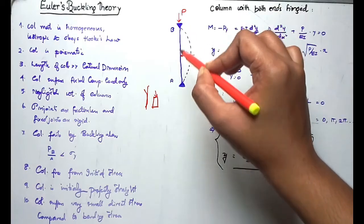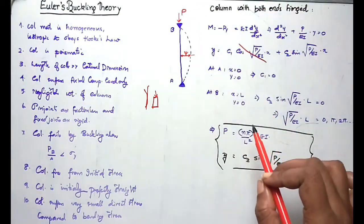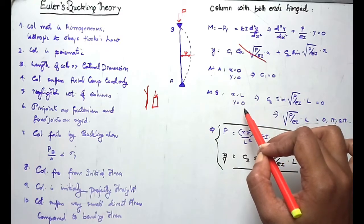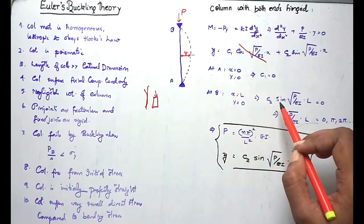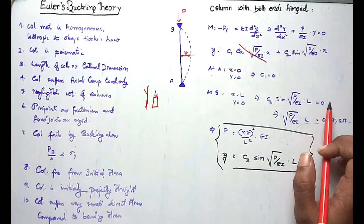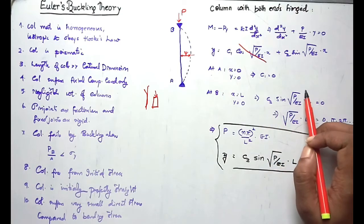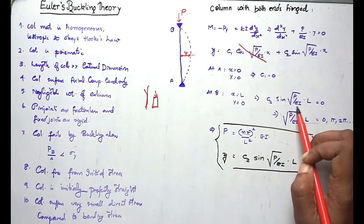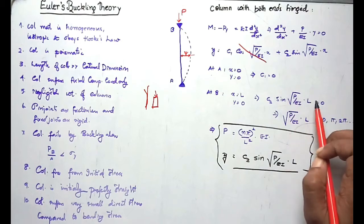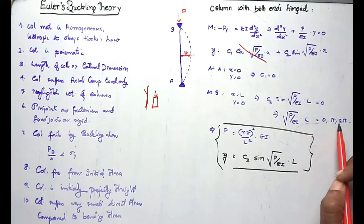At point B, x = L, which is also hinged, so deflection should be zero, y = 0. Substituting: C2·sin(√(P/EI)·L) = 0. This implies either C2 = 0 or sin(√(P/EI)·L) = 0. Since C2 = 0 gives a trivial solution, we need sin = 0, which occurs at 0, π, 2π, and so on.